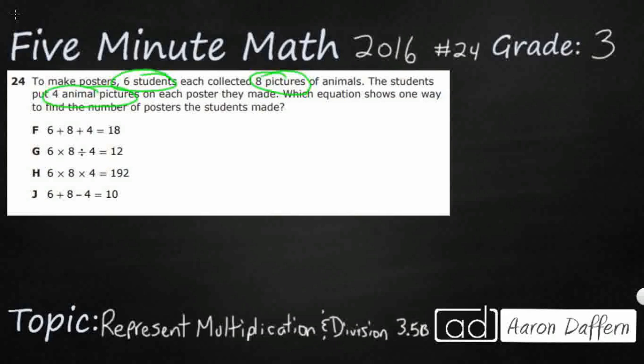So we're going to be using 6, 8, and 4. As you can tell, our four answer selections all include those three digits: 6, 8, and 4. The question is, what do we do with them? Add, subtract, multiply, or divide? Which equation shows one way to find the number of posters that the students made?